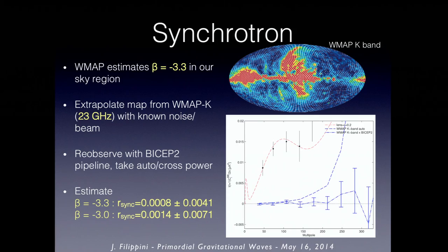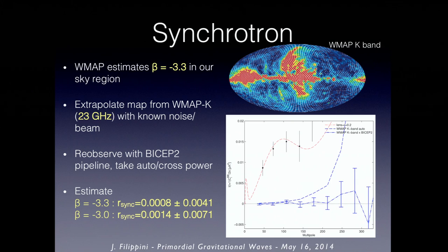On synchrotron: WMAP mapped the entire sky in synchrotron with polarization. Their K-band map at 23 GHz has great signal-to-noise, with an estimated power spectral index of about -3.3 in antenna temperature in our sky patch. We take that map, extrapolate it, and re-observe it with BICEP-2, fully passing it through our pipeline. The resulting auto-spectrum and cross-spectrum are basically nothing — the inferred R is 0.0008 ± 0.004. Even with a softer spectral index of -3, R is about 0.001. Even when you add error bars, there doesn't appear to be significant power in our region from synchrotron.